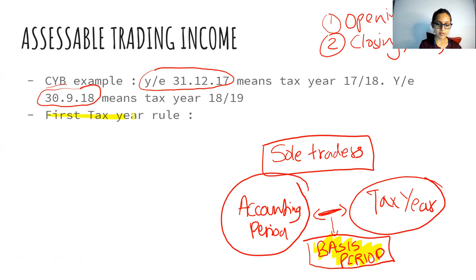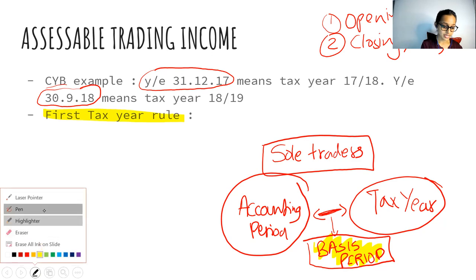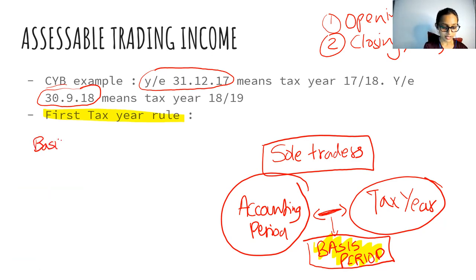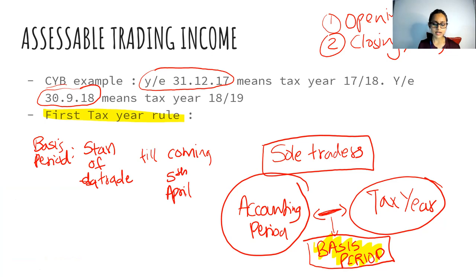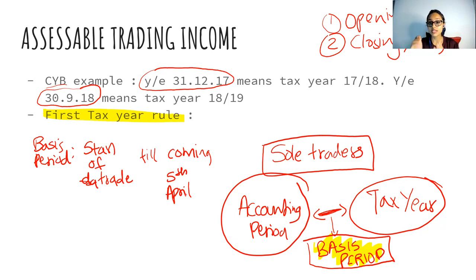For the first tax year, the basis period runs from start of trade till the coming 5th April. There are numerous examples in your handouts and the very first question deals with this. Start of trade till the coming 5th April — that is the first tax year rule.